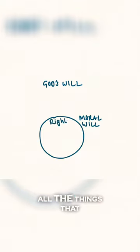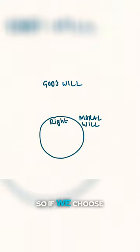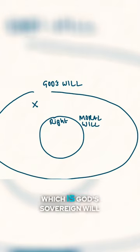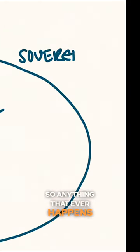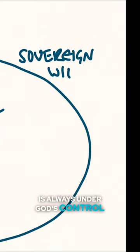So let's say this is God's moral will, the area of right and wrong, and within this circle are all the things that are right. So if we choose to do a sin then it's outside of God's moral will, but it's not outside of this which is God's sovereign will. So anything that ever happens is always under God's control.